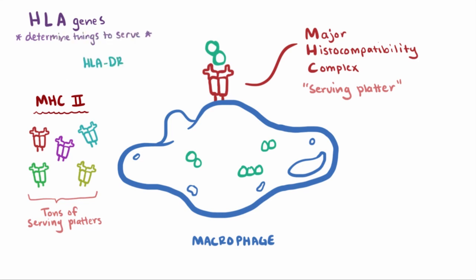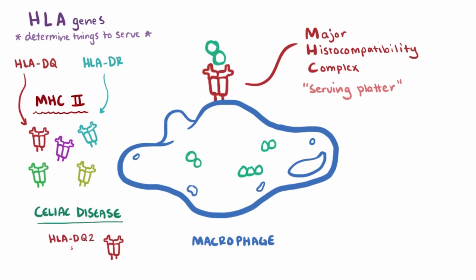So for example, HLA-DR encodes for an MHC that serves up something different than the one HLA-DQ encodes for. Researchers have noticed that patients with celiac disease typically have specific deamidated gliadin serving platters, such as one called HLA-DQ-2 or HLA-DQ-8, which is an interesting clue that kind of helps us better understand celiac disease.